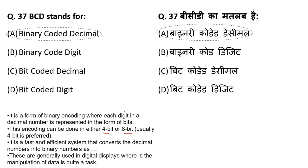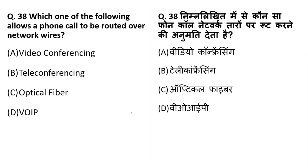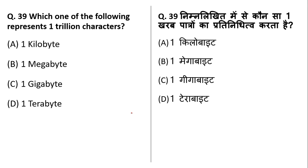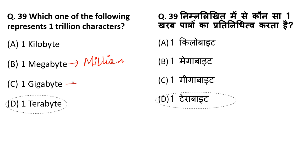Which one of the following allows a phone call to be routed over network wires? That is VOIP — Voice Over Internet Protocol. Which one of the following represents one trillion characters? That is one terabyte. Remember: one million characters is a megabyte, one billion characters is a gigabyte, and one trillion characters is a terabyte.